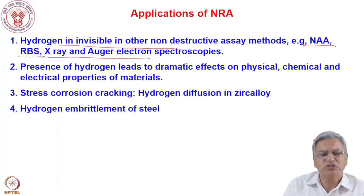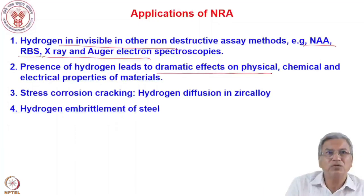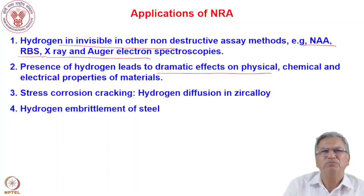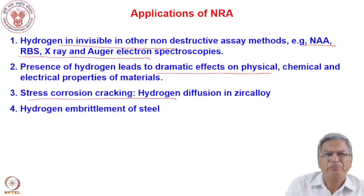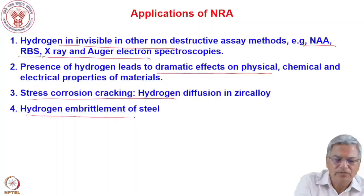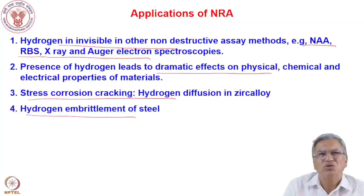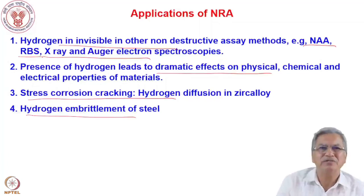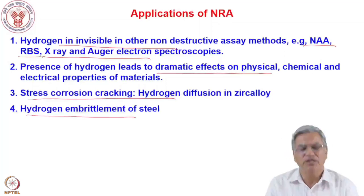Technologically, hydrogen can have dramatic effects on physical, chemical, and electrical properties of materials. In nuclear technology, hydrogen diffusion into zirconium from water leads to zirconium hydride formation and stress corrosion cracking. Similarly, steel is prone to embrittlement by hydrogen. Hydrogen-induced embrittlement or corrosion is a significant problem in many important materials, and a non-destructive depth profiling technique is therefore very valuable. NRA is mostly used for hydrogen depth profiling in technologically important materials.